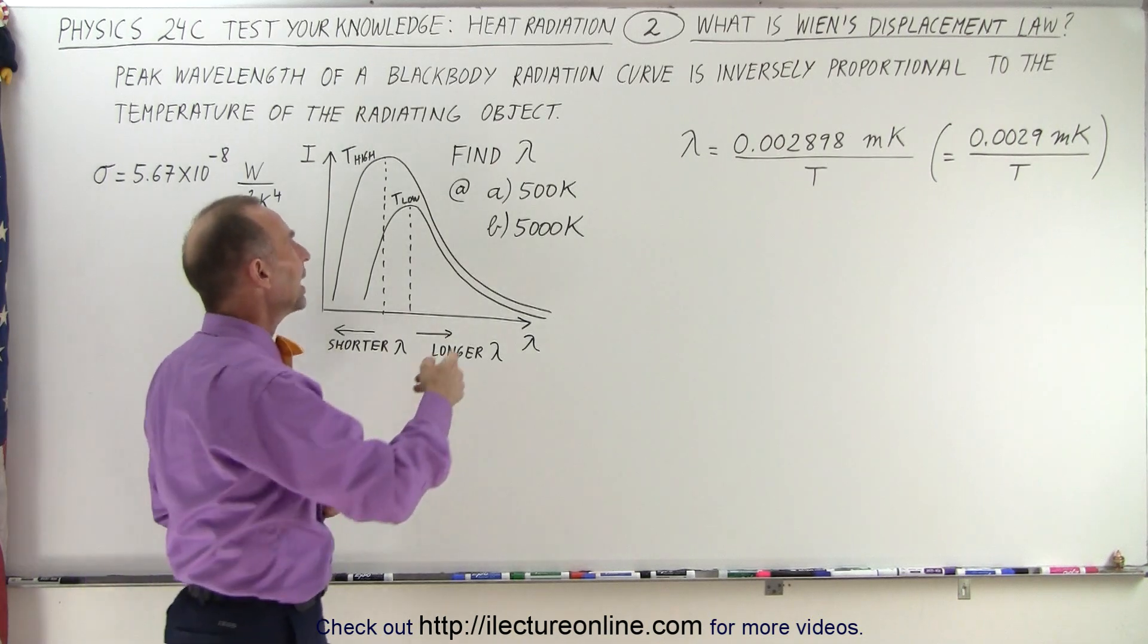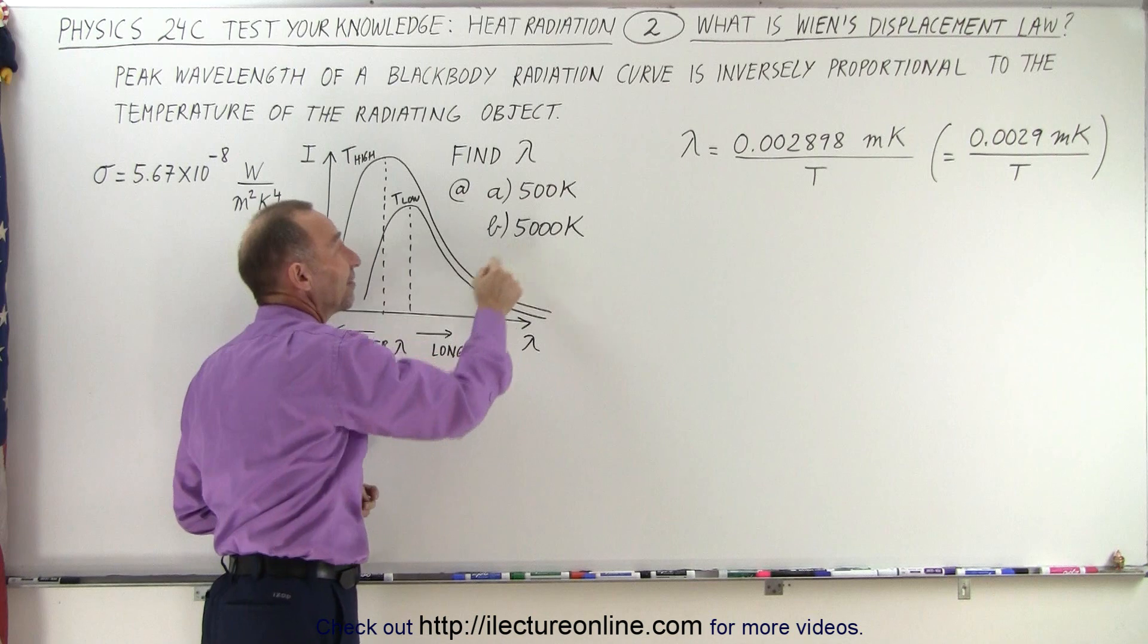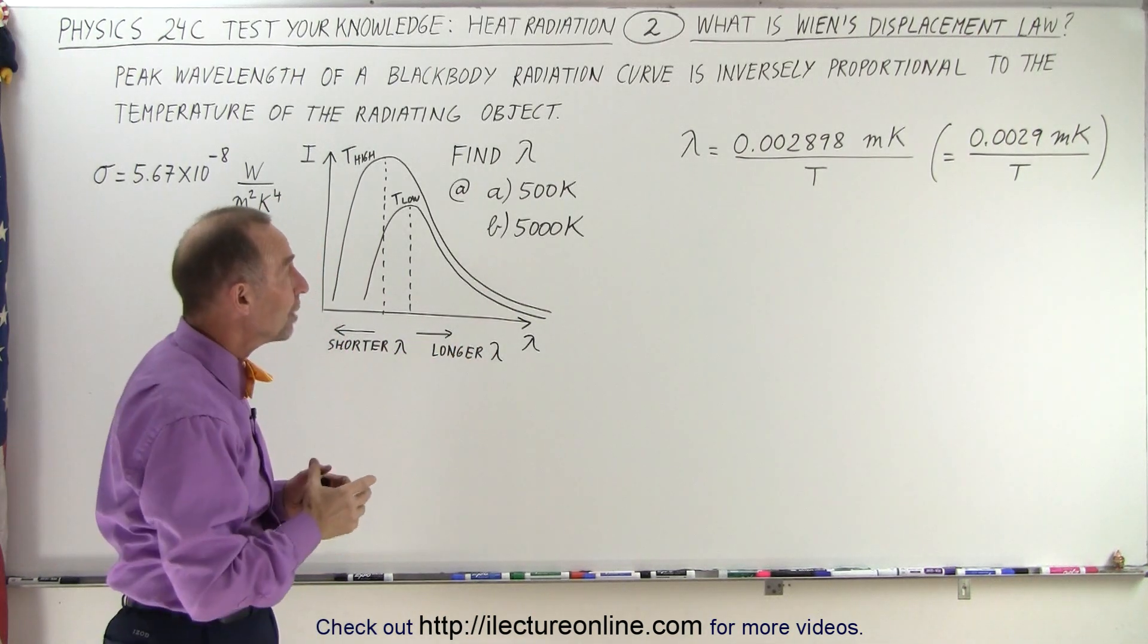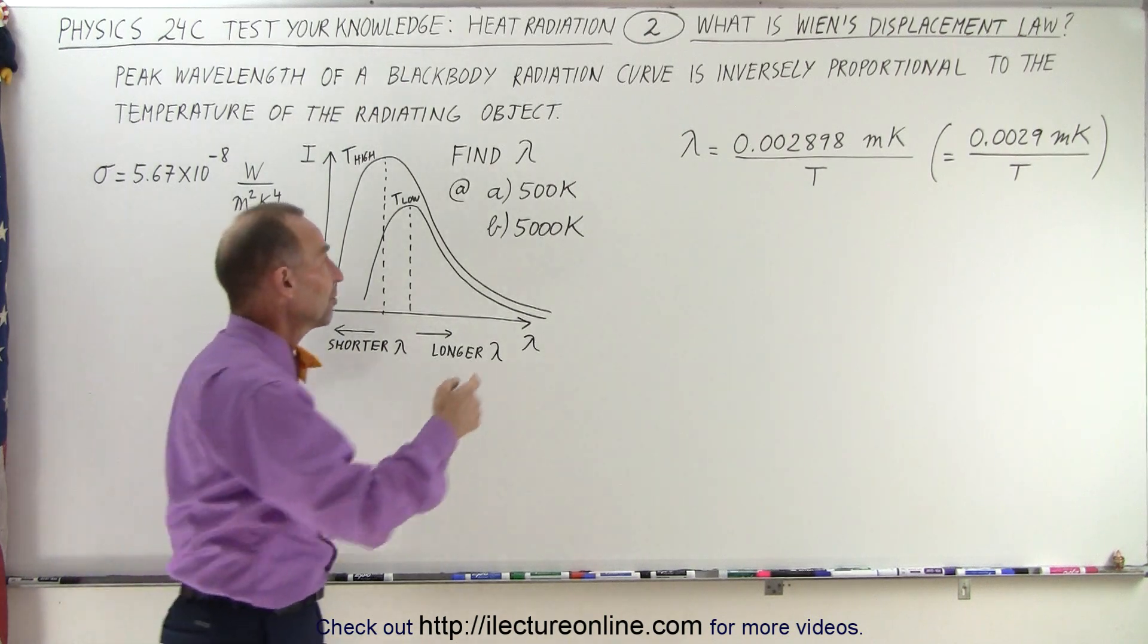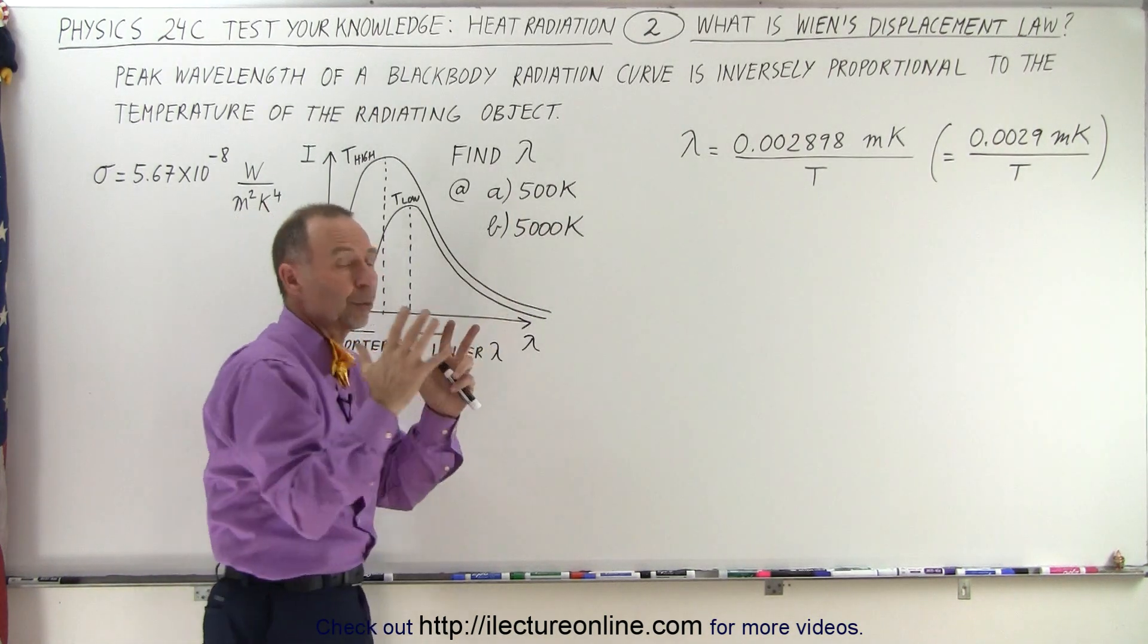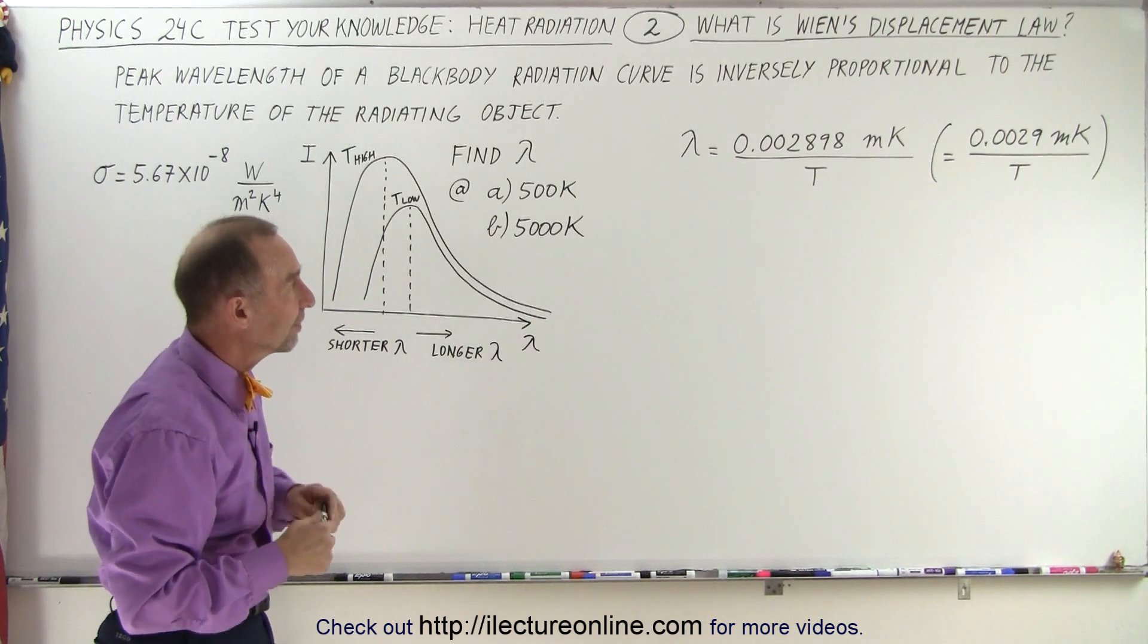So if we want to calculate the wavelength for an object at 500 Kelvin versus an object at 5,000 Kelvin, let's go ahead and do that. Since it's inversely proportional to the temperature, if we increase the temperature tenfold, we expect a reduction in the wavelength of 10 as well. So let's see if that's the case.